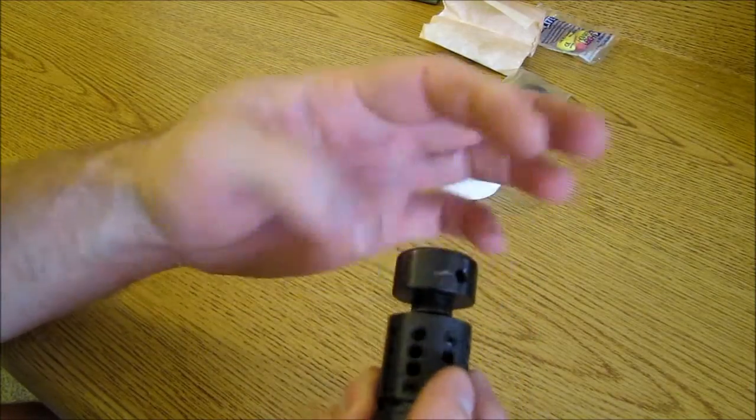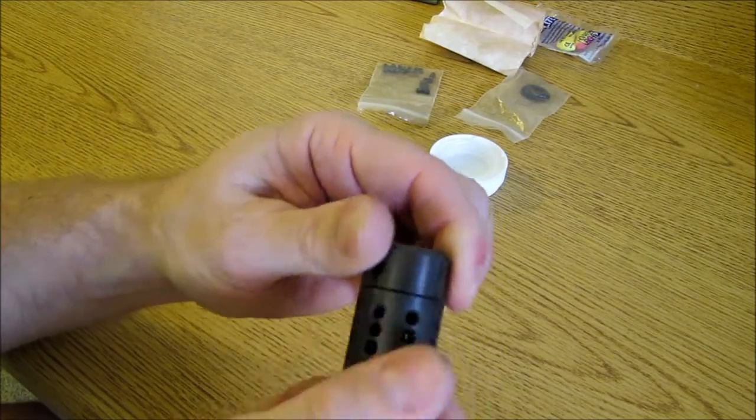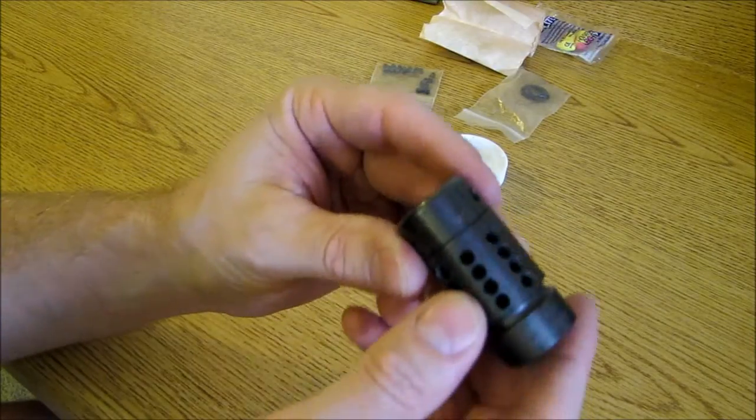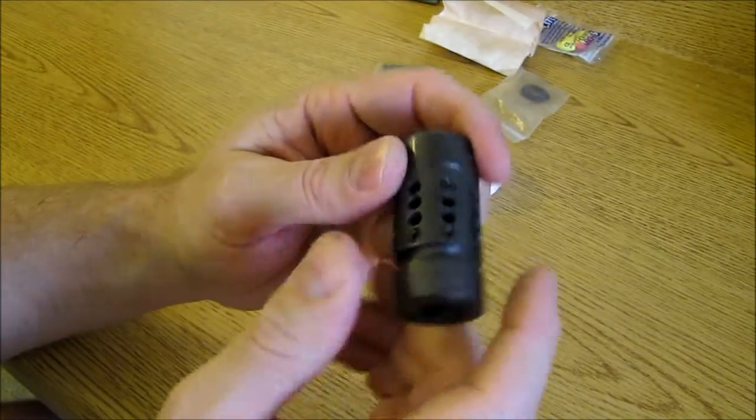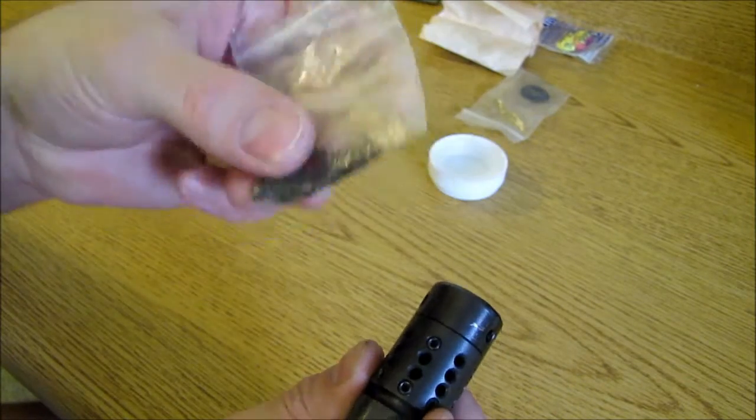It's basically a thread protector when they're not stacked. Just a quarter drop of blue Loctite on there and crank that down good with a strap wrench. If you ever need to get that off, you can heat the compensator a little bit and remove that. Alright, let's start talking about the configuration of these.